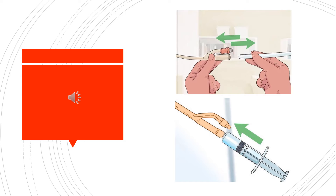The proper procedure for flushing a Foley catheter is as follows. Number one, you want to protect yourself utilizing standard precautions when performing this procedure. This means washing your hands thoroughly before completing, and also protecting any part of your body that may potentially become exposed to urine. You need to utilize clean gloves.